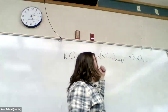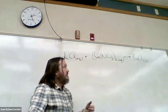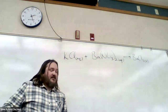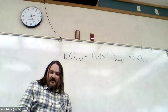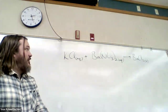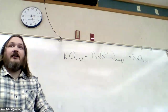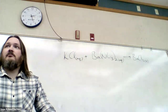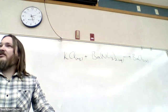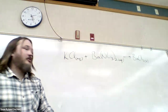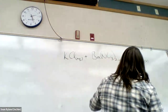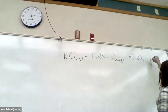What happens to the rest of the ions? If we mix barium chloride and potassium nitrate together, the remaining ions are still just floating around in the solution as ions. So what is the other product in this case?